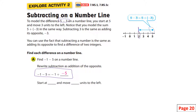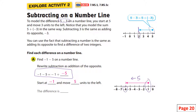So you start at negative one and you move five units to the left, because you're subtracting five or adding a negative five. You start at negative one and go five to the left — a five-unit motion to the left — and you end up on negative six. So the difference is negative six.